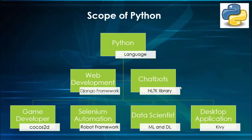Python with Django or Pyramid framework can be used for web development. Chatbots, one of the most trending technologies, can be developed using the NLTK library. If you are a game lover, we can develop games with the Pygame library. For functional testers wanting to switch to automation, you can automate Selenium using Python, which is easier compared to Java. We can also use the Robot Framework, one of the most popular automation frameworks, and develop desktop applications using PyQt.